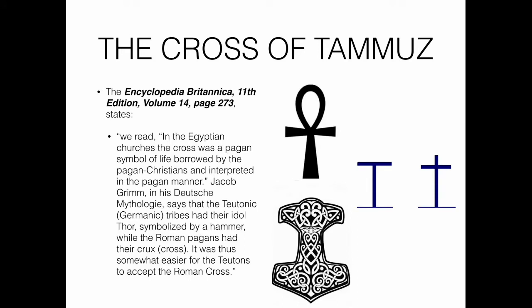The Encyclopedia Britannica, 11th edition, volume 14, page 273, reads: in the Egyptian churches the cross was a pagan symbol of life, borrowed by the pagan Christians and interpreted in the pagan manner. Jacob Grimm in his Teutonic Mythology says that the Teutonic or Germanic tribes had their idol Thor symbolized by a hammer, while the Roman pagans had their crux or cross — making it easier for the Teutons to accept the Roman cross. To the right you see the Egyptian ankh, Thor's hammer, and various Greek and Roman cross variations.